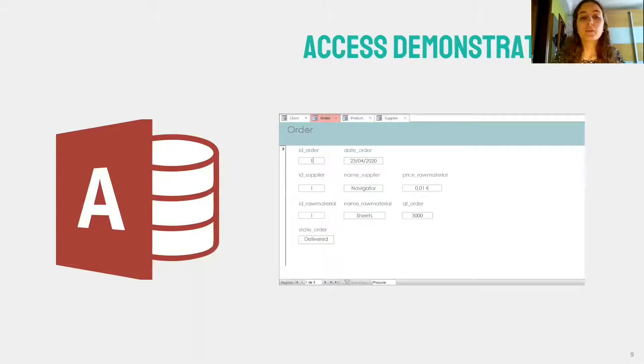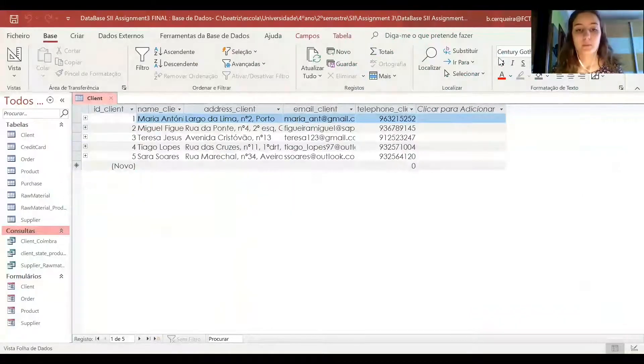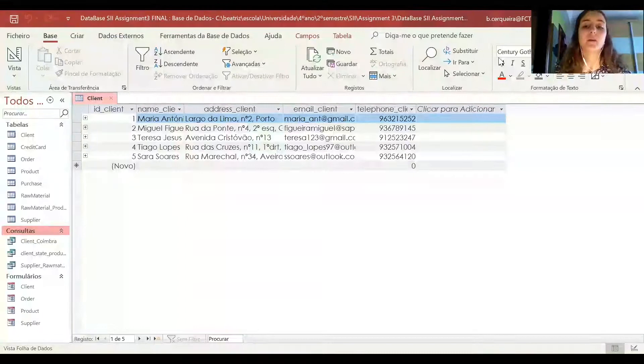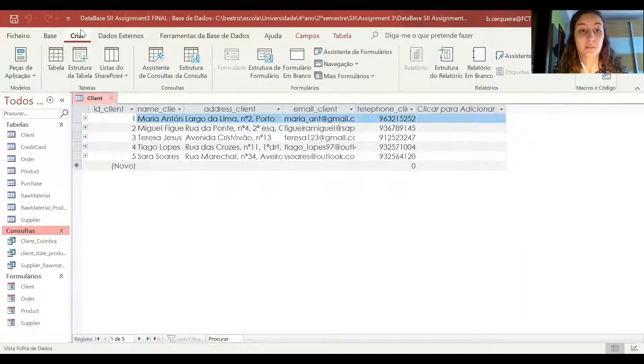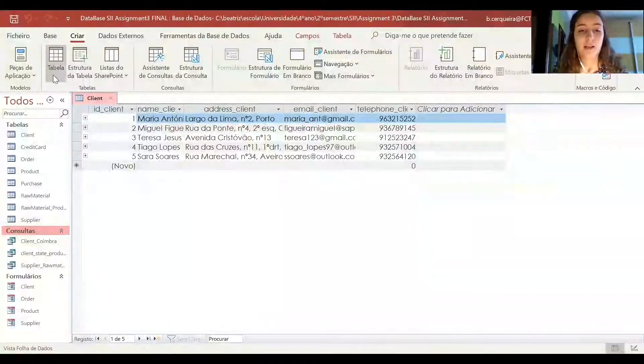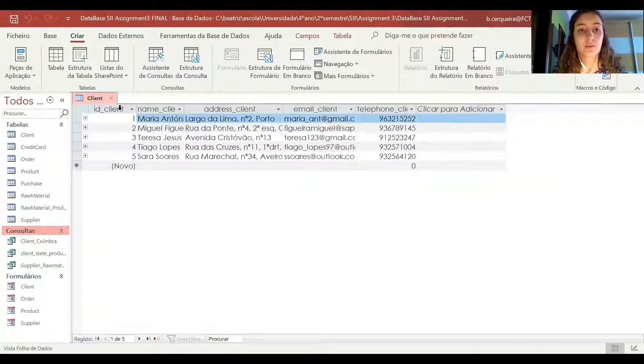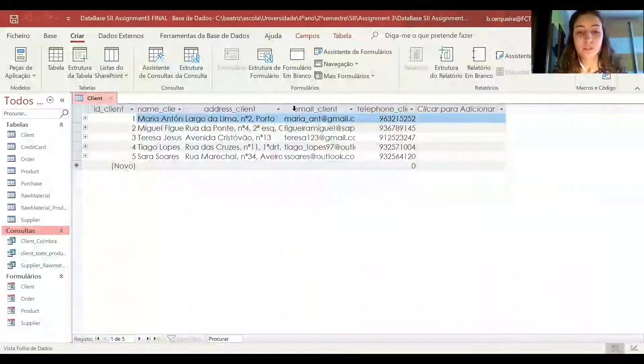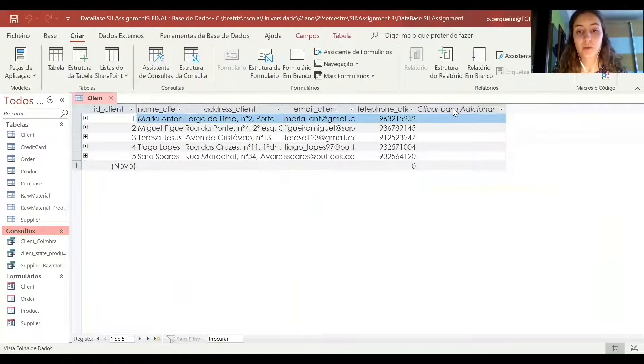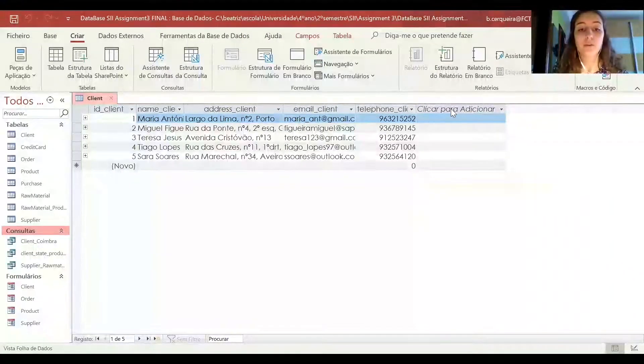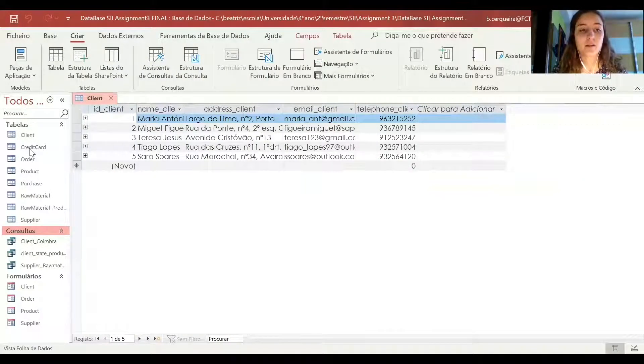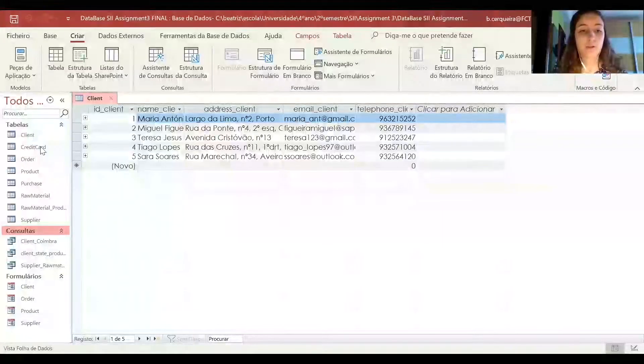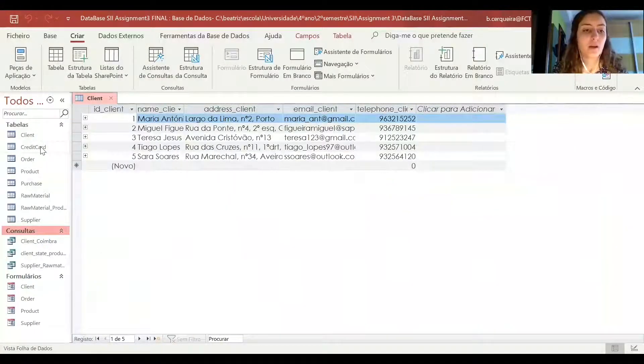So now we're going to explore the program a little bit more so you can see how we work with it. So first we created our tables with the info from the database diagram in the creates separator with the table function and in each tables column, there's the corresponding attribute and we filled out each table with the corresponding information, for example, about our clients or their credit card information, our products, suppliers and so on.